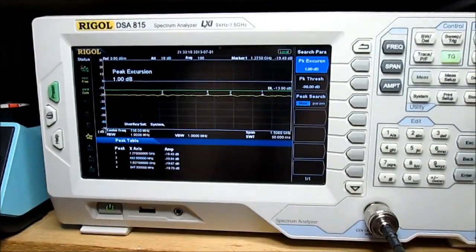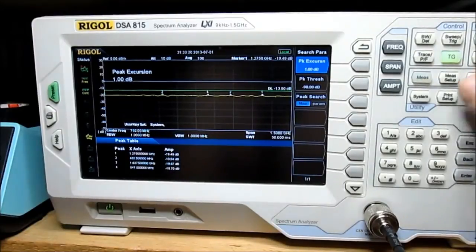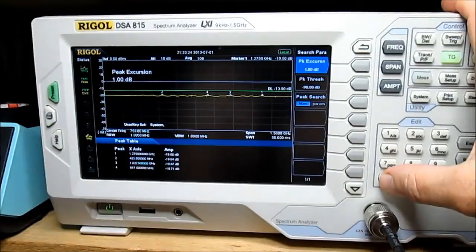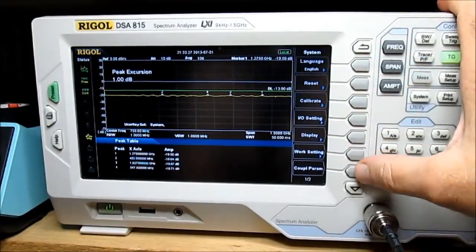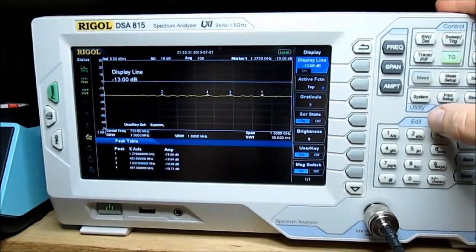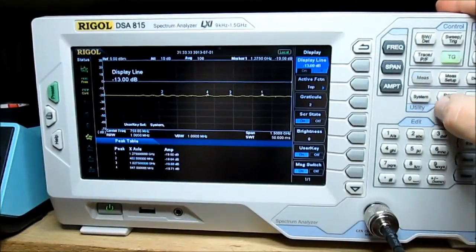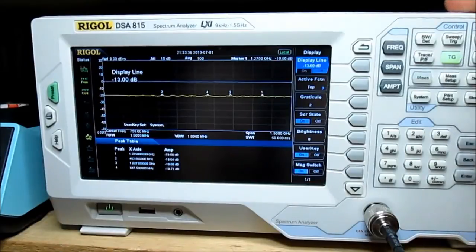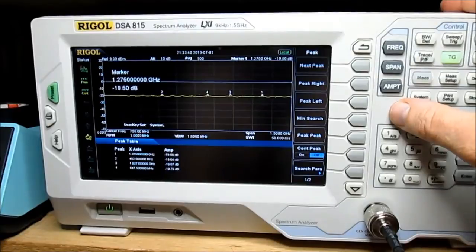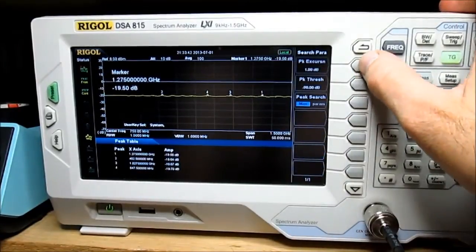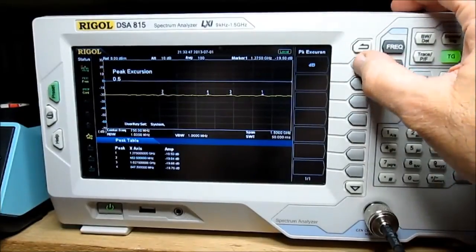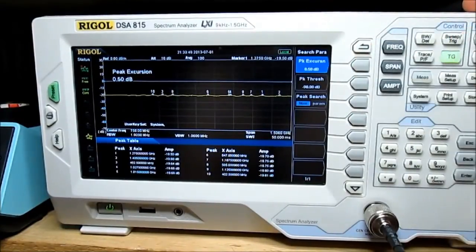See part of the problem is the actual peaks that are there are so small that it really is hard to discern them with the scope. Let me hit system really quick here and turn the data line off. Go back to peak, search parameters, and let's just change this to like 0.5 dB. There we go, a little more there.